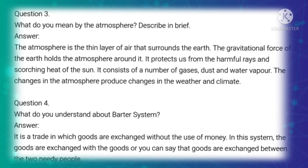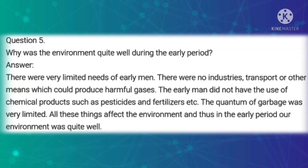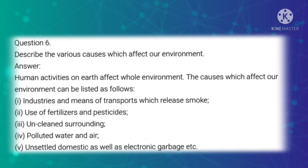Fifth long-answer question: Why was the environment quite well during the early period? Answer: There were very limited needs of early men. There were no industries, transport or other means which could produce harmful gases. Early men did not use chemical products such as pesticides and fertilizers. The quantum of garbage was very limited. All these factors meant the environment during the early period was quite well.